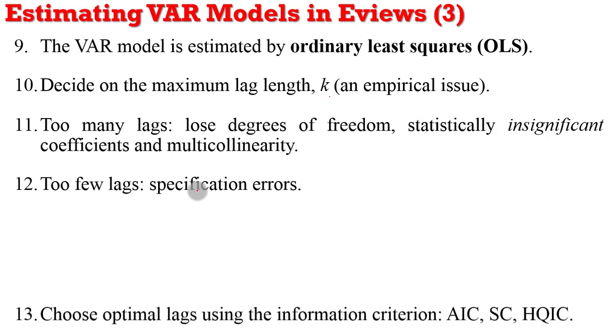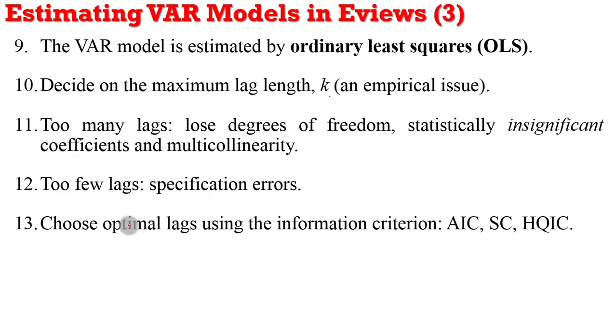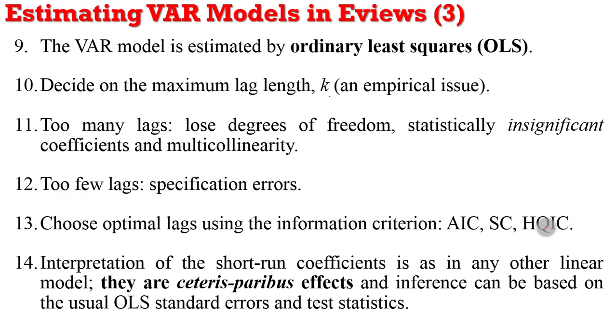So what do you do? You have to rely on the optimal lags as indicated by the information criterion, AIC, SC, or HQIC. Lastly, how do you go about interpreting the results of your VAR model? Simply interpret them in the ceteris paribus arguments, as you would interpret ordinary least squares results. This is because inferences can be based on the same OLS standard errors and test statistics. So interpreting your VAR results should not be a problem. Simply use the ceteris paribus arguments and you're good to go.